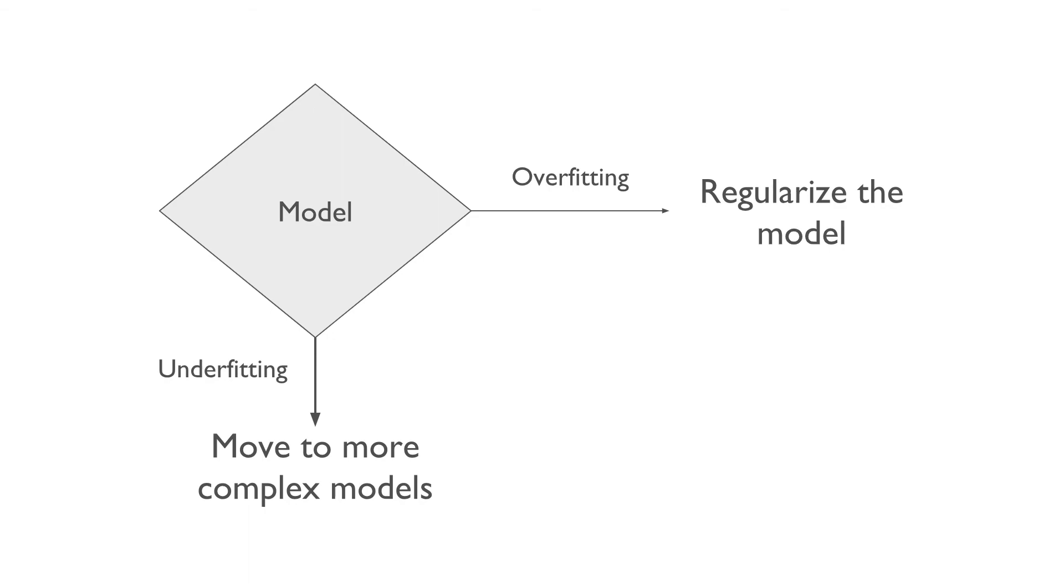The regularization techniques are different for different kind of models. For example, in case of neural network, we turn off some fraction of neurons temporarily. This technique is called dropout. We will dive deeper into regularization techniques later in this course, once we have learned individual models.